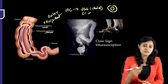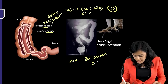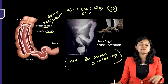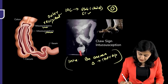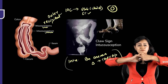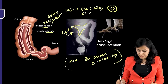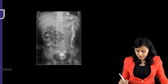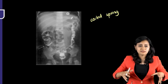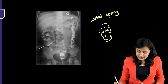Barium enema was previously the gold standard and is both diagnostic and therapeutic in intussusception. The signs seen on barium enema: as barium reaches the point of intussusception, it spreads around like a claw — the claw sign. Another sign is the coiled spring sign: barium outlines the intussusceptum in the space between the intussusceptum and intussuscipient.